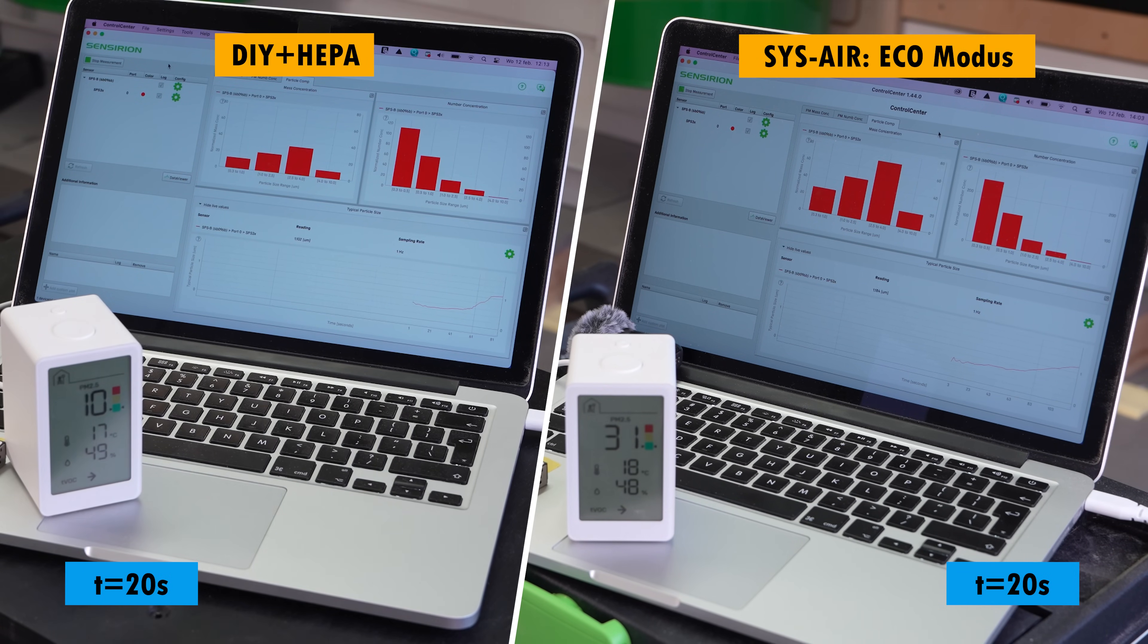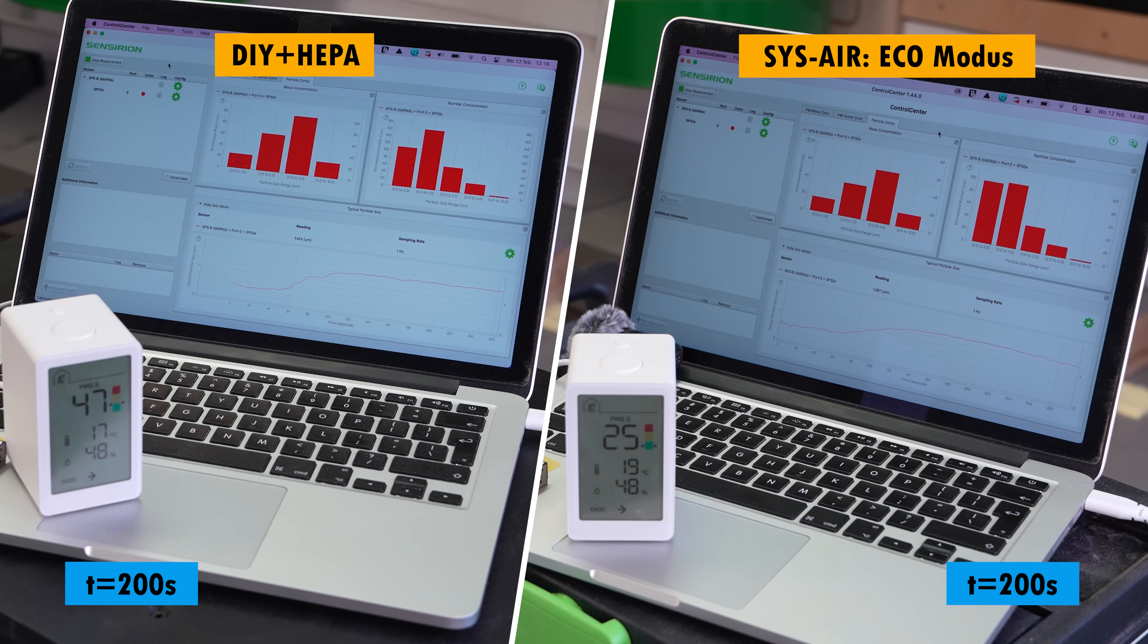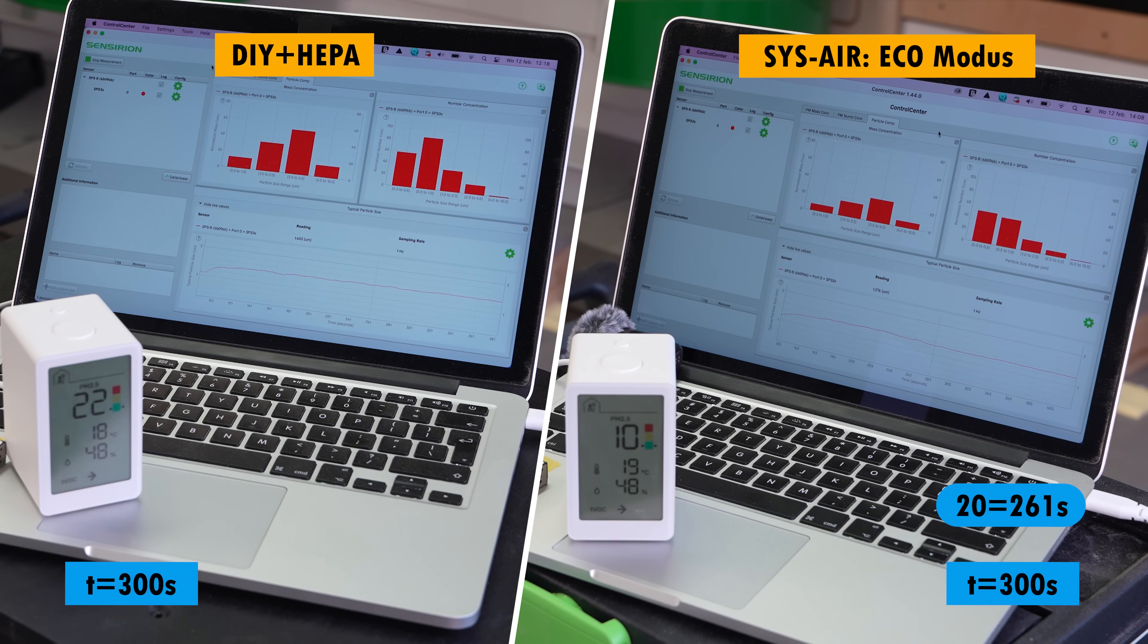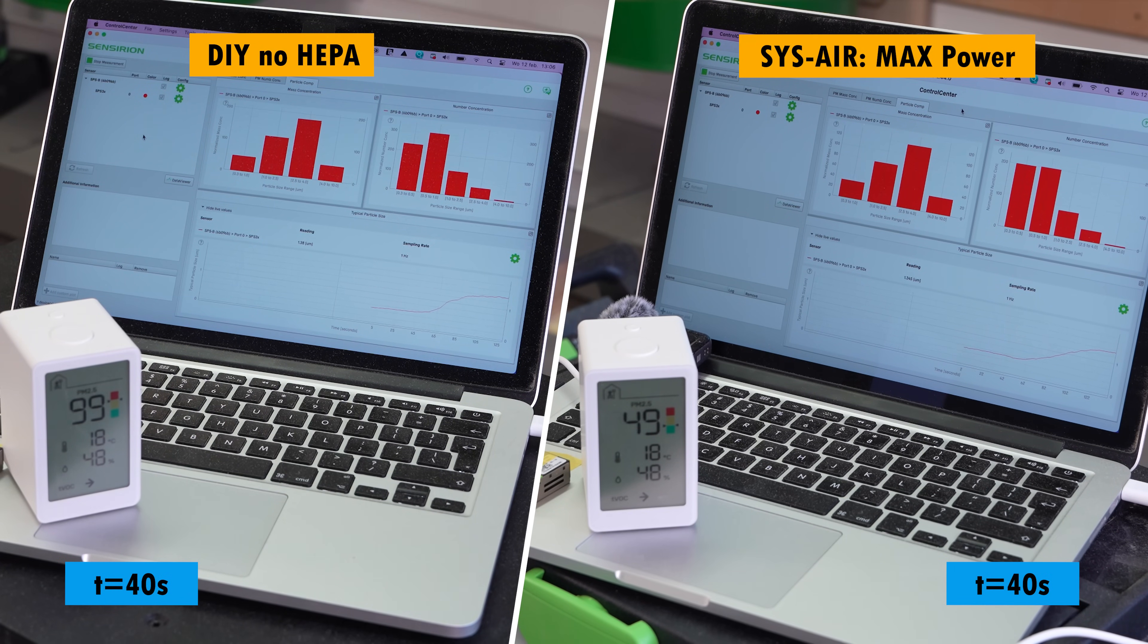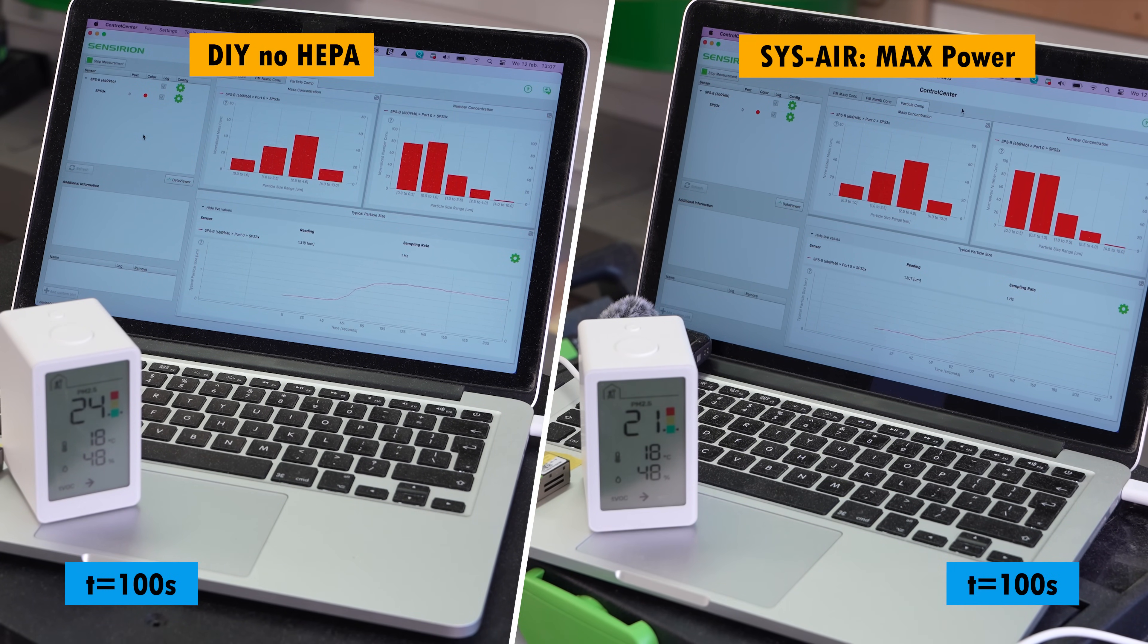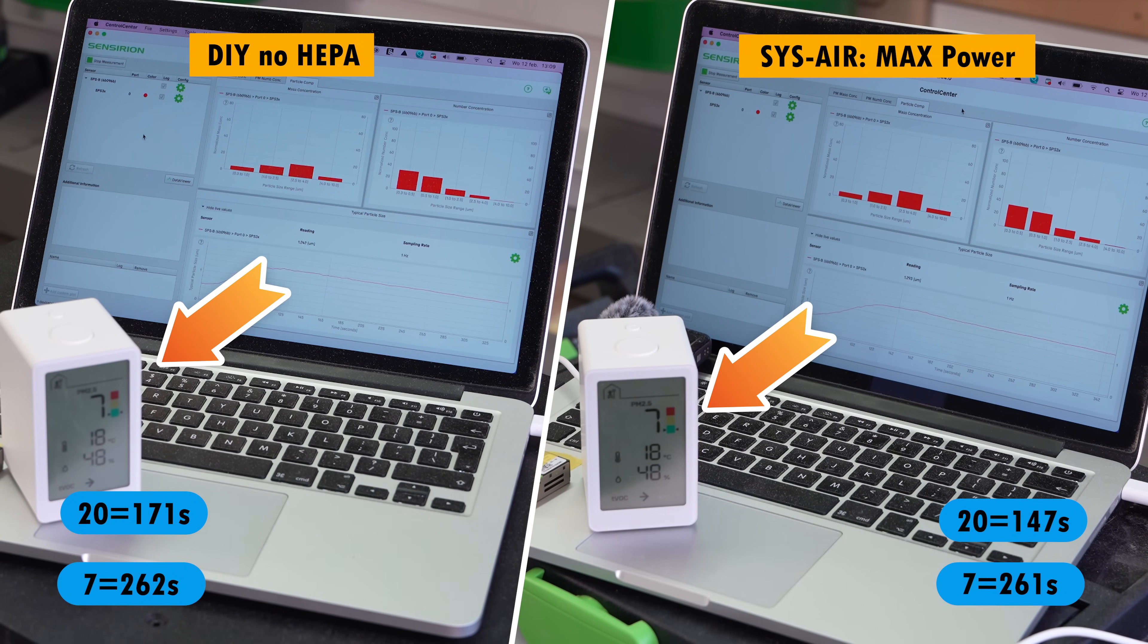And the battle of the SIS Air with my HEPA DIY build was not even a close call. The Festool on eco mode outperformed my version by 50%. Removing my HEPA filter did a far better job and resulted in a photo finish with the SIS Air on max power reaching the starting level of 7.